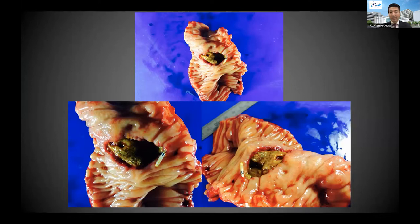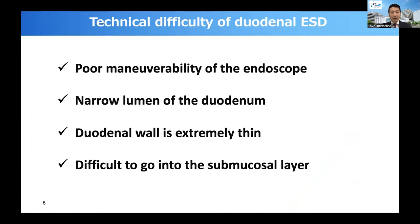There are several reasons for the technical difficulty of duodenal ESD. The duodenum is far from the mouth with a narrow lumen, which often limits the maneuverability of the endoscope and sometimes makes it difficult to even approach the region. Moreover, the duodenal wall is extremely thin and perforation can easily occur.